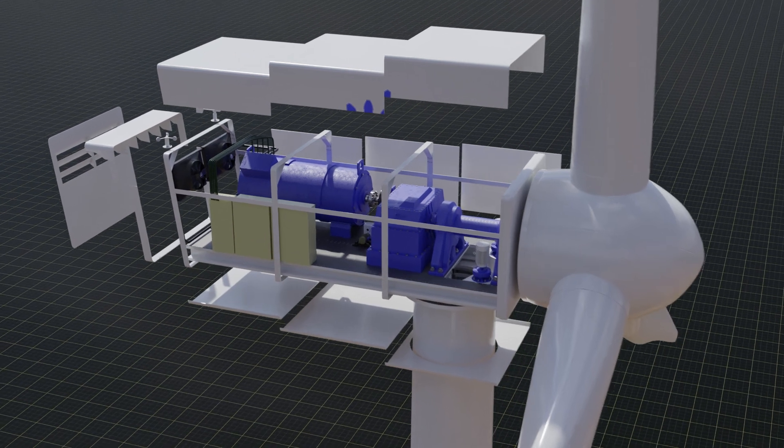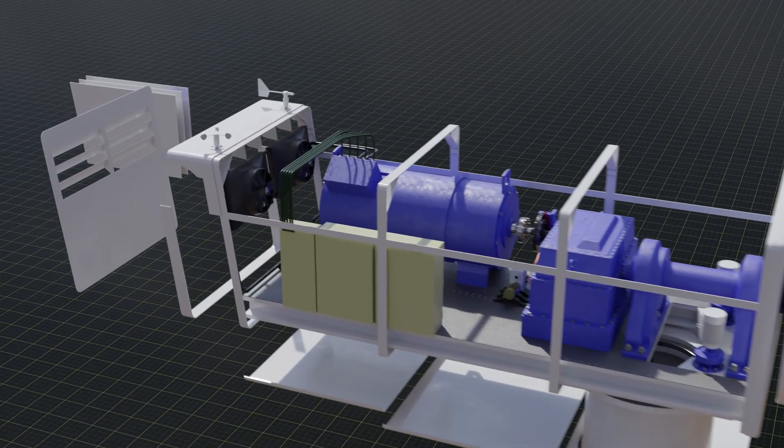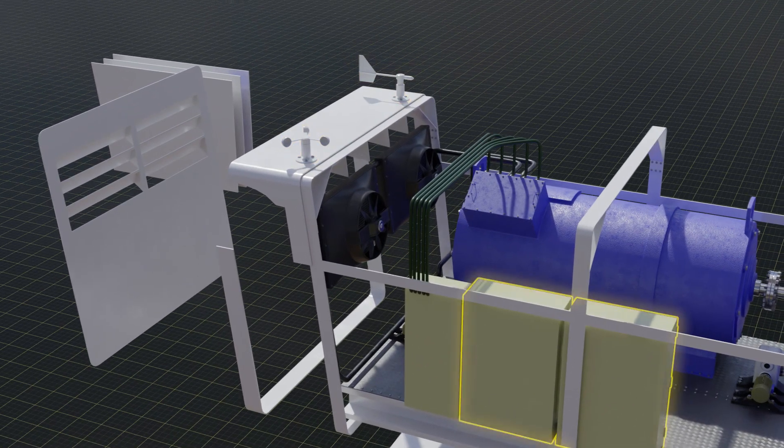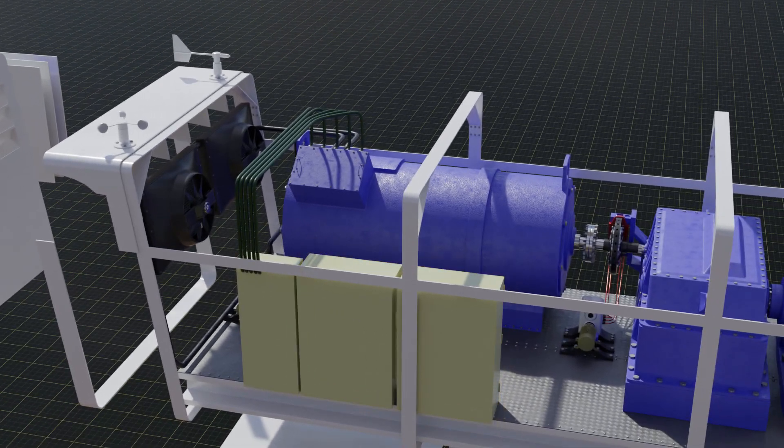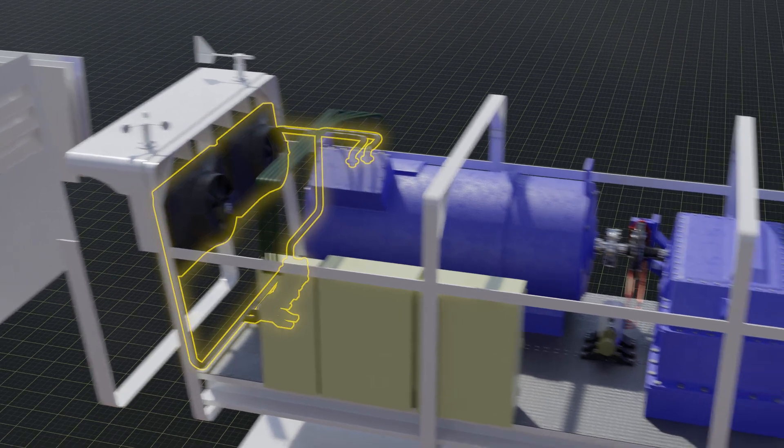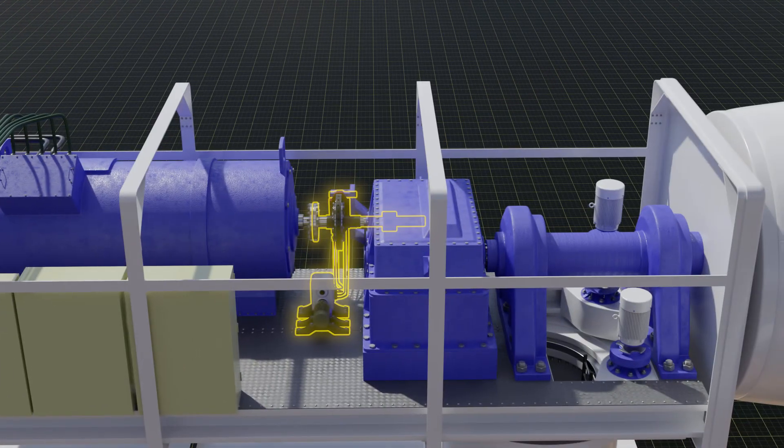In most cases, all turbines have similar components: climate sensors, transformer, electric generator, cooling system, brake system, gearbox, main shaft, hub, and blades.